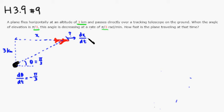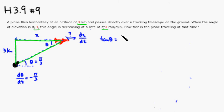Let's look at this right triangle. This angle here is also theta. We need an equation relating x, 3, and theta. We can use the tangent ratio: tangent of theta equals opposite over adjacent, which is 3 over x.